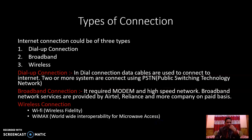Next are the types of internet connections. Basically, on the internet we can create three types of connections. The first is dial-up, the second is broadband, and the third is wireless. Dial-up is a previous technology connection in which we use the telephone network to connect systems. Two or more systems are connected using PSTN — Public Switching Telephone Network — in which we are connected by using telephone exchanges. The second is broadband connection.